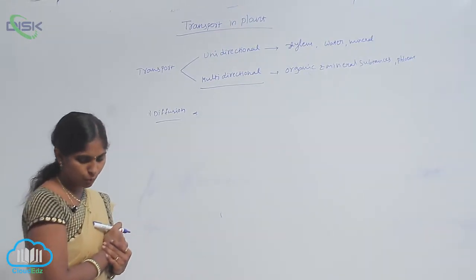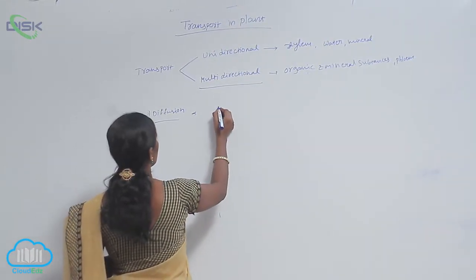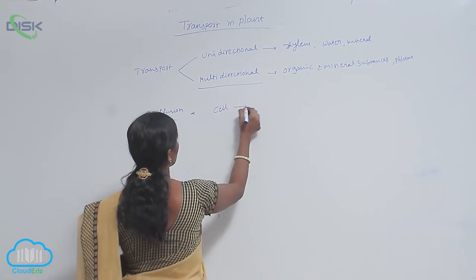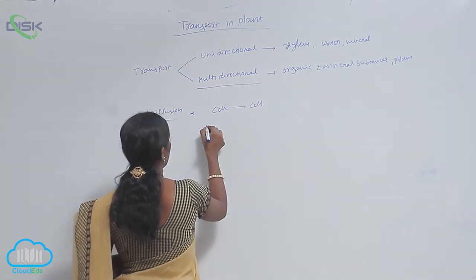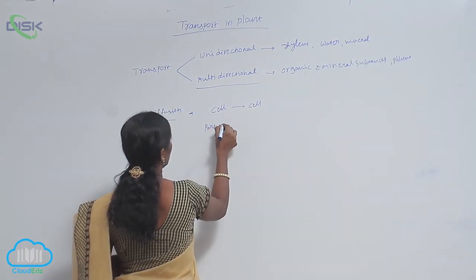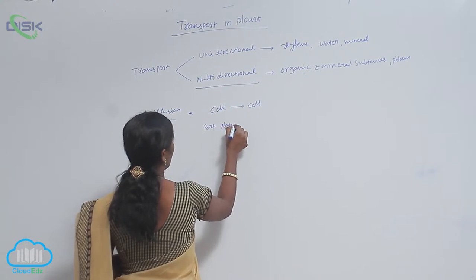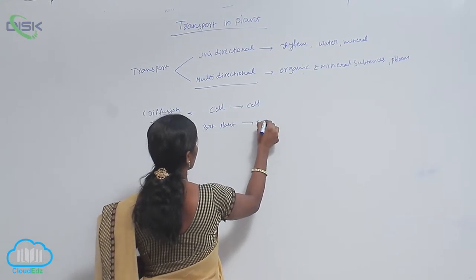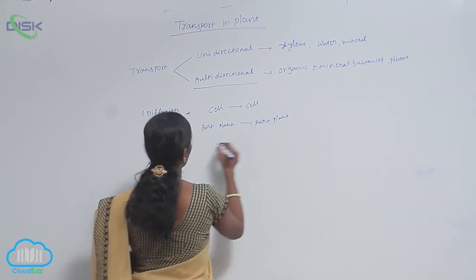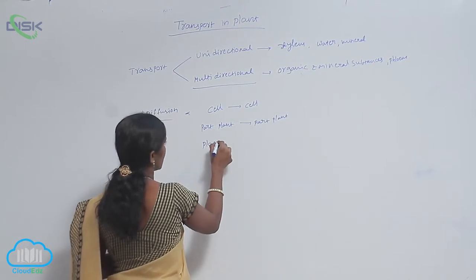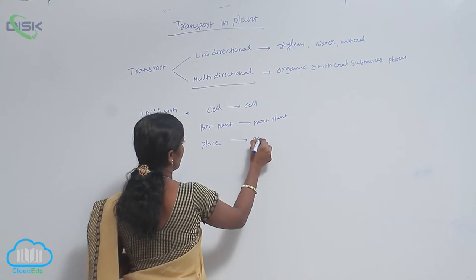One type of movement is from cell to cell, from one part of the plant to another part of the plant, from one place to another.